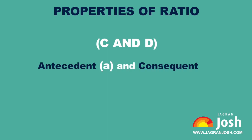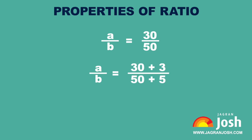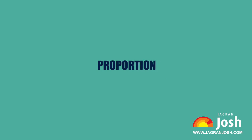If two different numbers C and D are to be added to the antecedent and consequent, it must satisfy the condition: C upon D is equal to A upon B. For example, if A upon B equals 30 upon 50 and 3 and 5 are to be added to the numerator and denominator respectively, then A upon B equals 30 plus 3 upon 50 plus 5, since 3 upon 5 equals 30 upon 50.